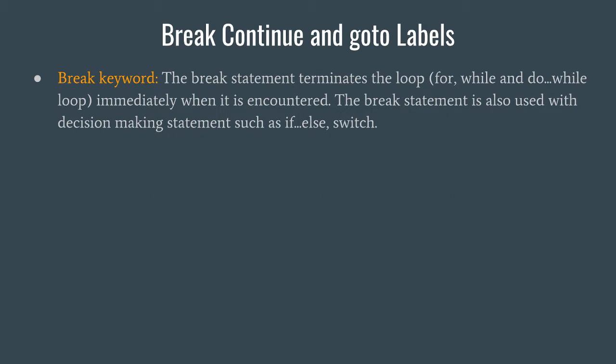What the break keyword does is — whenever you have a loop and you want to terminate before the endpoint, you can use the break keyword. The break keyword acts like a trigger which takes you out of the loop. The break statement terminates the loop — for, while, and do-while — immediately when it is encountered. The break statement is also used with decision-making statements; in the case of switch, we also use the break keyword, and I'll show you an example of that in this video itself.